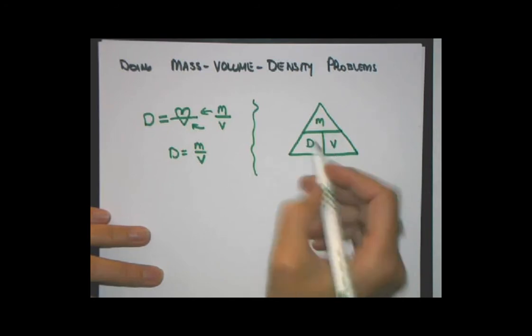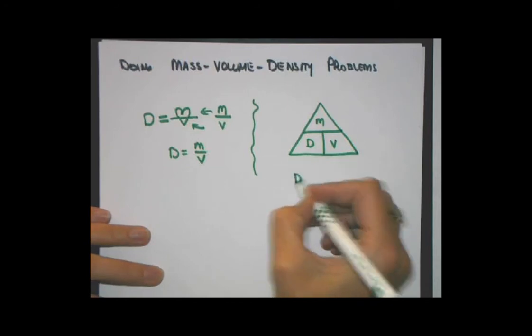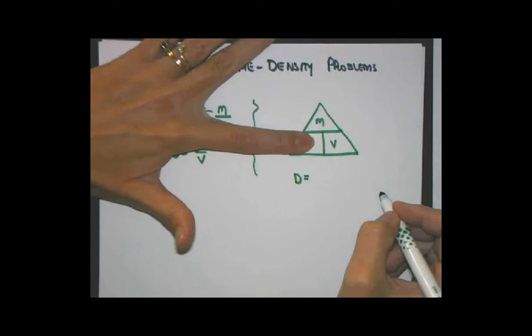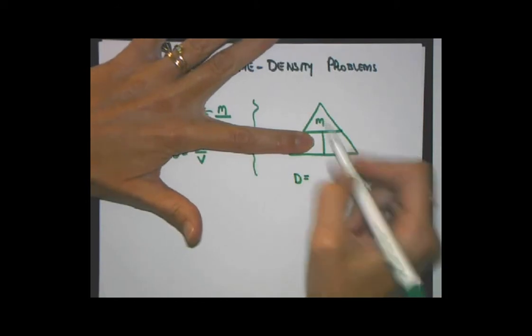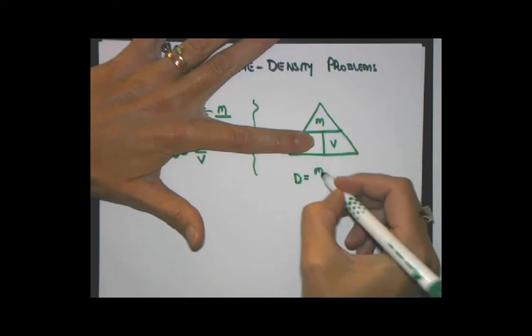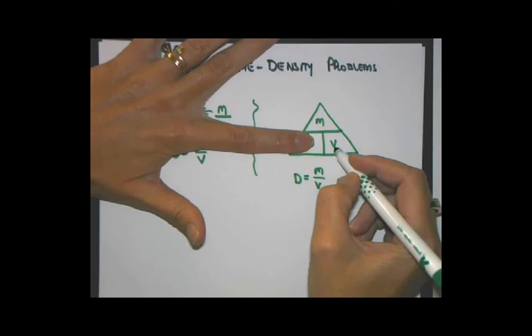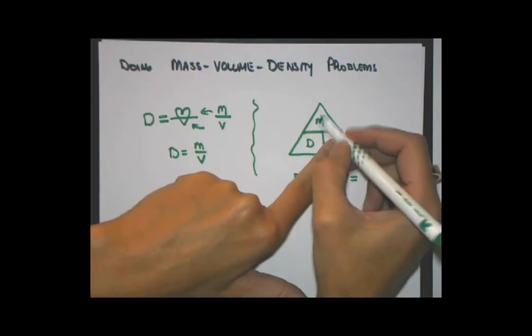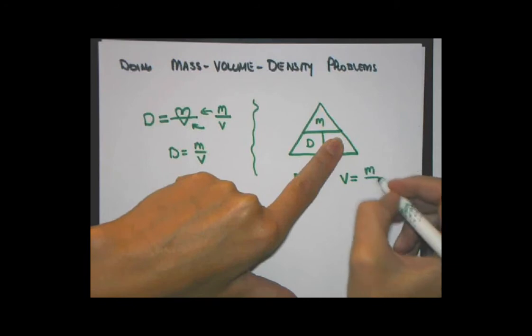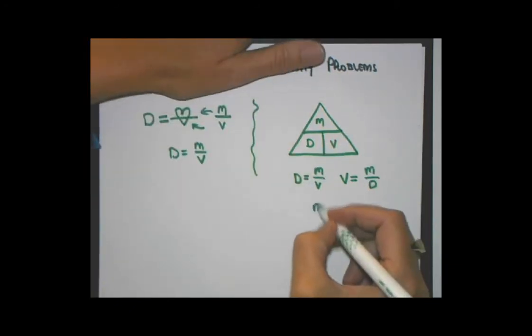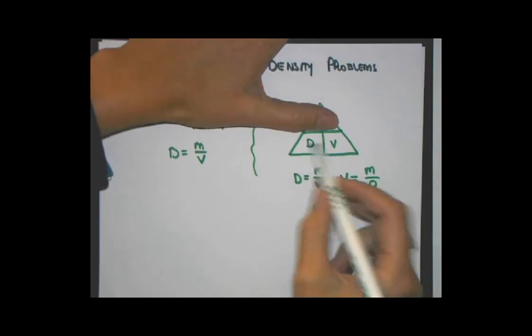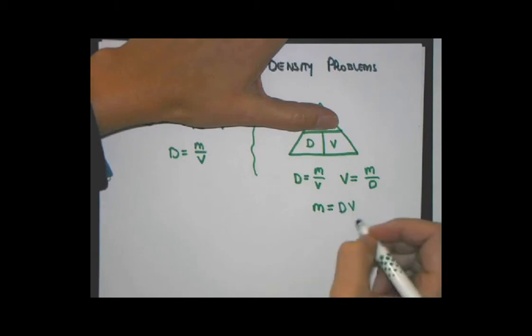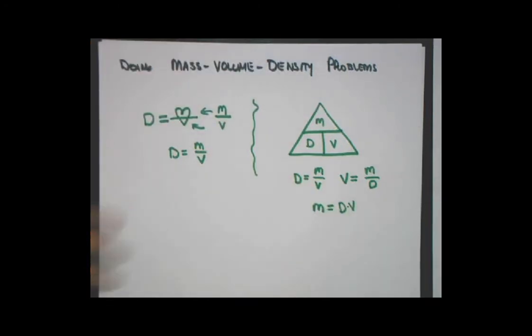The way that this triangle works, is if I want to know the formula for density, for example. Density equals, and I want to find that formula, I'm going to cover up the thing that I'm looking for the formula for, in this case density. What's left behind here is like a fraction with mass on the top and volume on the bottom. It's mass over volume. If I want to know the formula for volume, I can cover over volume here. What's left behind is a formula that's mass on the top and density on the bottom. Mass divided by density. And if I want to know the formula for mass, I cover over mass, and what's left behind is a formula that's D and V next to each other. You know that in math, when you have two variables next to each other, you're multiplying them together. So this triangle can help you generate formulas to solve all different kinds of mass, volume, and density problems.